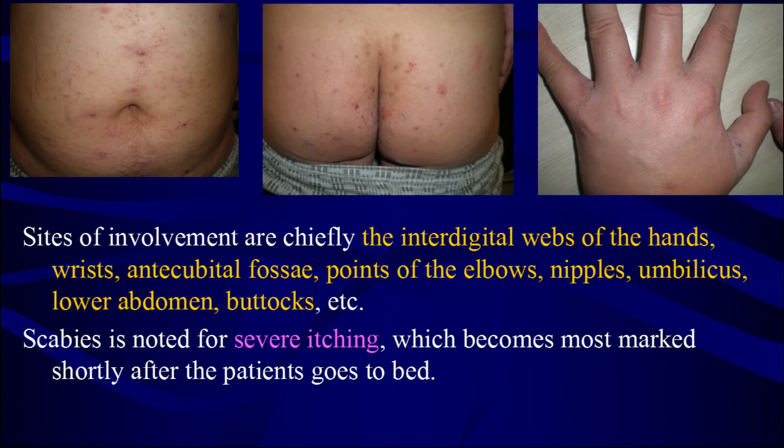Sites of involvement are chiefly the interdigital webs of the hands, wrists, antecubital fossa, points of the elbows, nipples, umbilicus, lower abdomen, buttocks, etc. Scabies is noted for severe itching, which becomes most marked shortly after the patients go to bed.